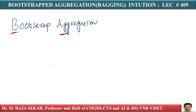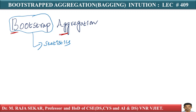The first ensemble technique that we will focus on is called bagging. Bagging is also referred to as bootstrapped aggregation. You learned this word 'bootstrap' when we learned about statistics — we learned about bootstrap samples. Bagging comes from bootstrapped aggregation; just see, the word bagging is coming from this particular thing.